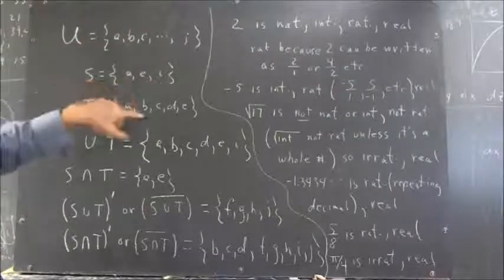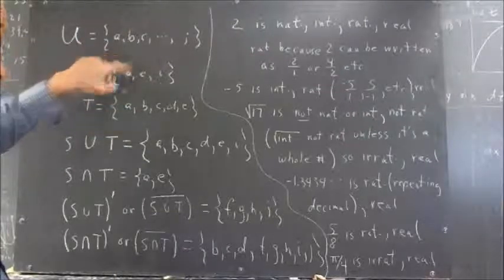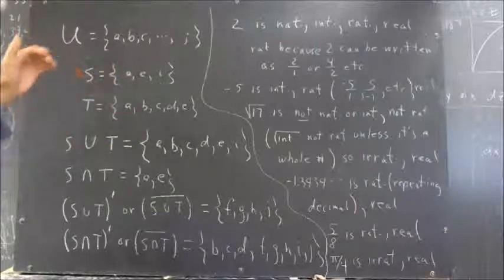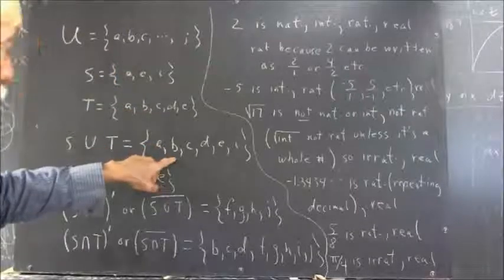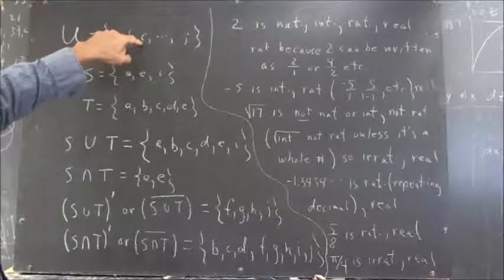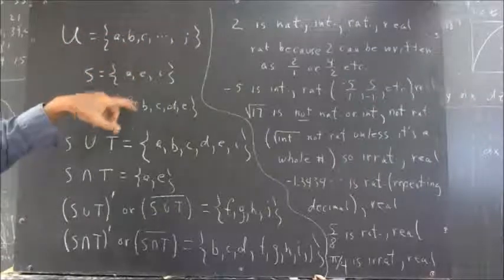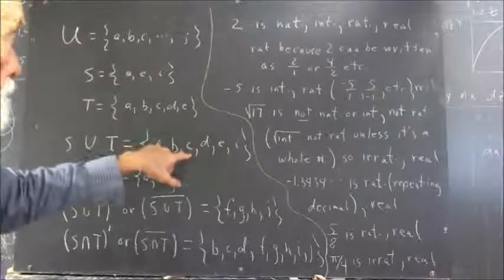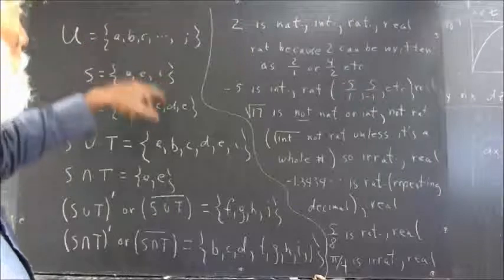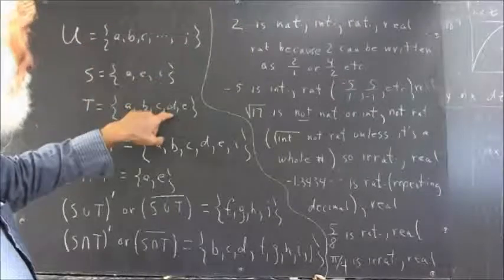B doesn't appear in set S, but it does appear in set T, so it appears in set S or set T. Therefore it goes here. C doesn't appear in S but does appear in T, so it's included. D doesn't occur in S, does occur in T, so it's included.